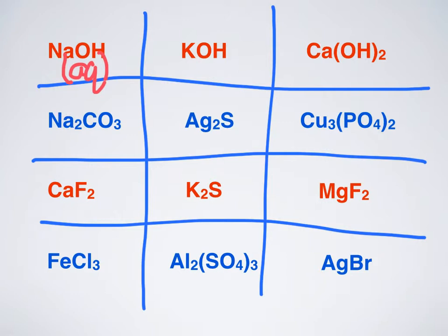Then I have KOH. K is potassium. OH is hydroxide again. I have AQ for that as well.